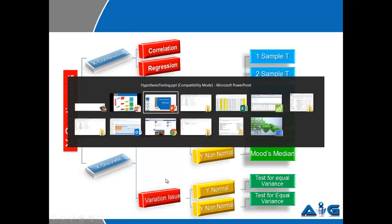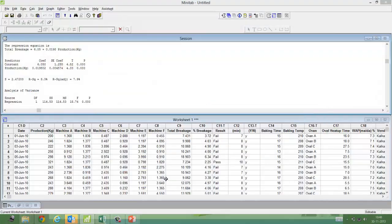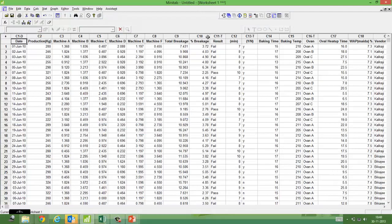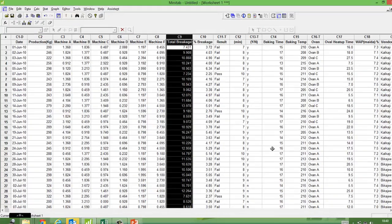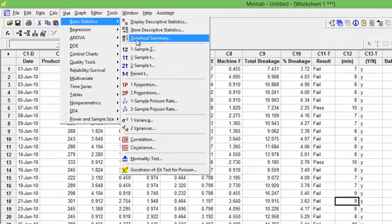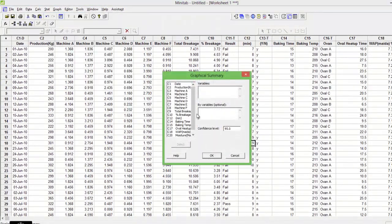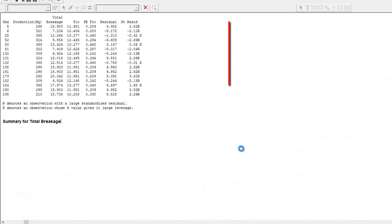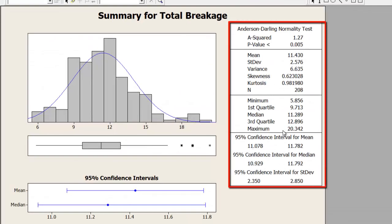To handle this simple question, we would rather use Minitab. So let's say the total breakage is my project Y. I will first try and understand the distribution of my project Y. Graphical summary for total breakage C9. If you see, it publishes all kinds of values here.